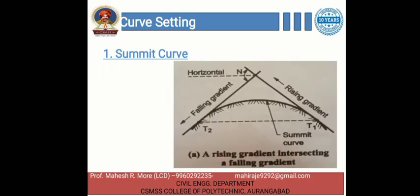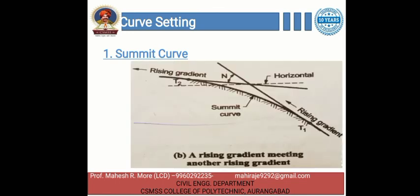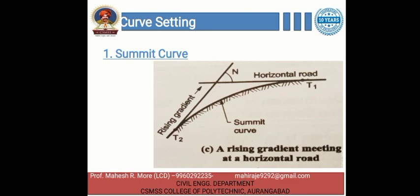The first type of vertical curve is the summit curve. The curves which have a convex surface on the upward side are termed as summit curves. Summit curves are mainly used when a rising gradient intersects a falling gradient, when a rising gradient meets another rising gradient, or when a rising gradient meets a horizontal road. For better understanding, we can see the various situations of summit curves in the figure.